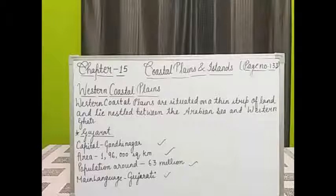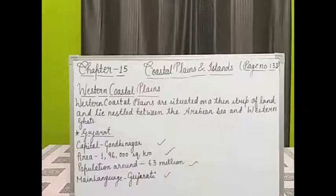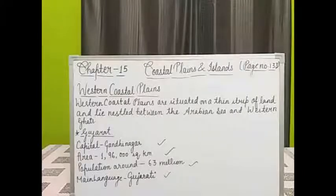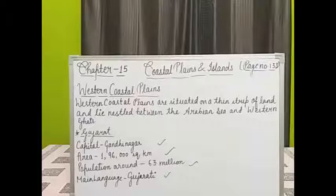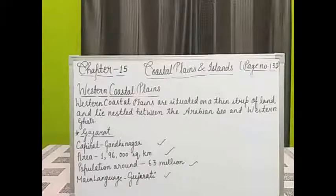We will begin with the state Gujarat. Gujarat is located in northwest India. When you see the location of Gujarat, you will find it between north and west — its location is northwest India. Gandhinagar is the capital of Gujarat. Sabarmati, Tapi, and Narmada are the main rivers which flow through the state.